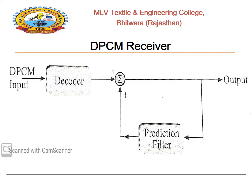The next slide shows the DPCM receiver, which has two sections: the decoder section and the prediction filter section. The decoder reconstructs the quantized error signal from the incoming binary signal. The prediction filter output and quantized error signal are summed to provide the quantized version of the original signal. The signal at the receiver will differ from the actual signal by the quantization error Q(nTs).